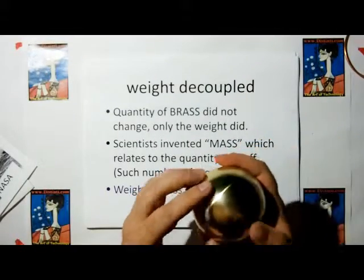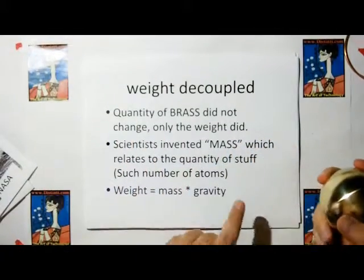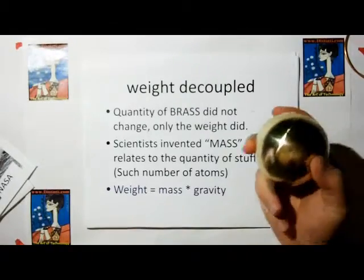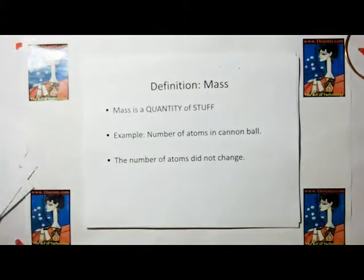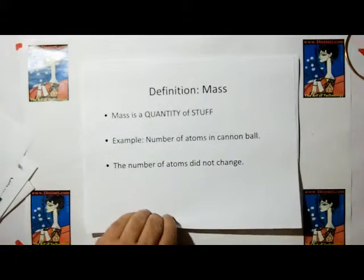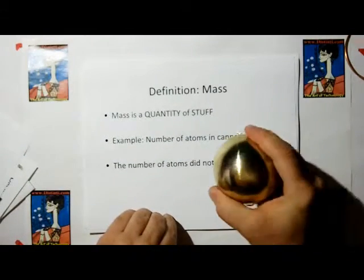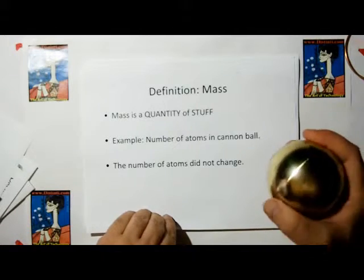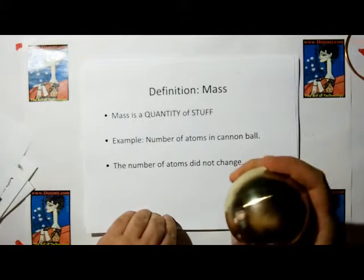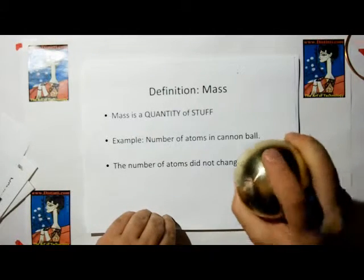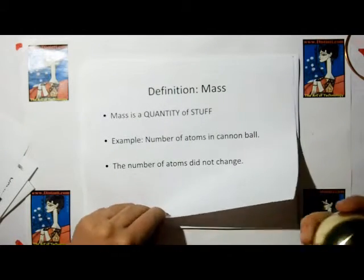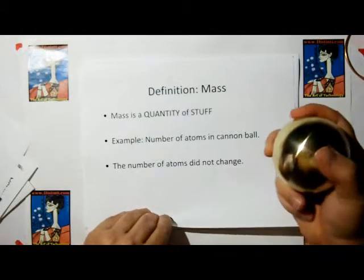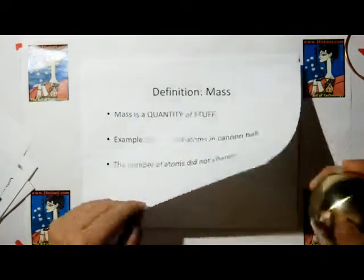And so they invented the thing called mass. Mass is a quantity of stuff, such as the number of atoms that make up this cannonball. When you went from the moon to the earth, the number of atoms of zinc and copper in the brass cannonball didn't change, but the weight did. So that's why they had to decouple mass — being the quantity of something — from the weight of something.